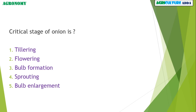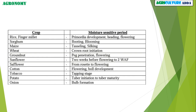The first question is: what is the critical stage of onion? Options are: tillering, flowering, bulb formation, sprouting, and bulb enlargement. The answer is bulb formation.